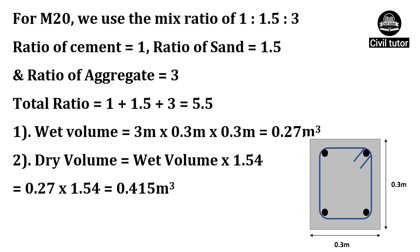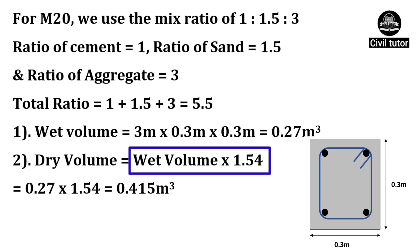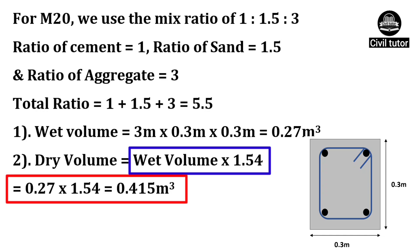Now, coming to the second step, in which we need to calculate the dry volume, which is given by the formula: wet volume multiplied by 1.54. Here, 1.54 is the conversion factor which I have already discussed in my previous lectures. The wet volume is already calculated as 0.27. On substituting these values, the dry volume will be equal to 0.415 meter cube.